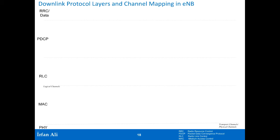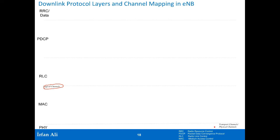The layers provide channels or interfaces to the layer above them. The channel that the MAC provides to the RLC is called the logical channel. The physical layer provides an interface to the MAC layer through something called the transport channel, and it finally transmits messages on the physical channel. For our understanding, we'll focus on the logical channels and the physical channel.